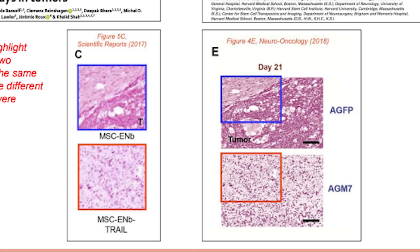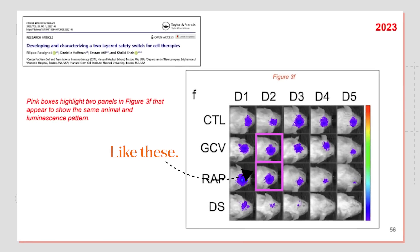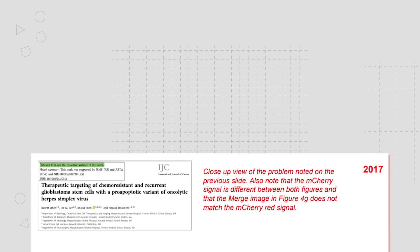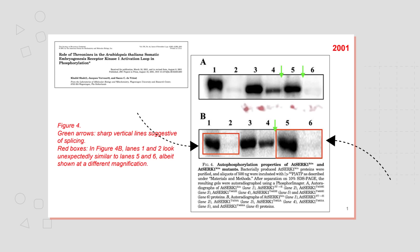I'm looking for duplications in papers and in images specifically — so that might be two images that are identical, or two panels that overlap, or duplications within a panel. Let's say a cell or a blood band has been stamped and duplicated a couple of times — that's not good, and that's usually not done by accident.